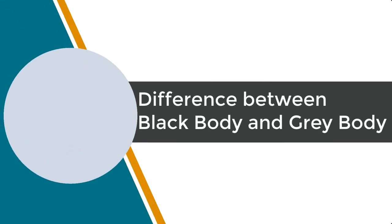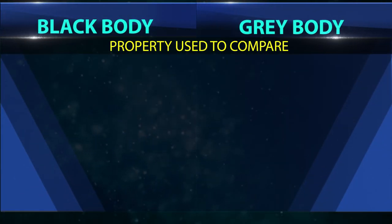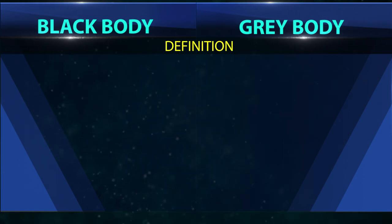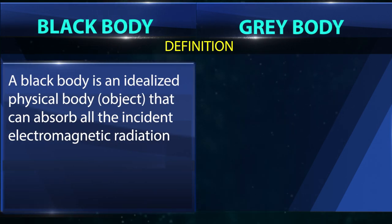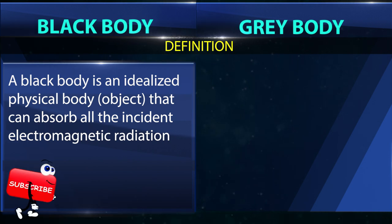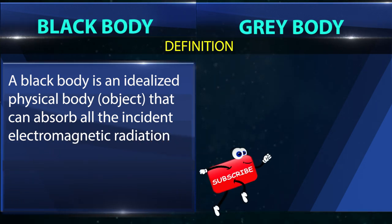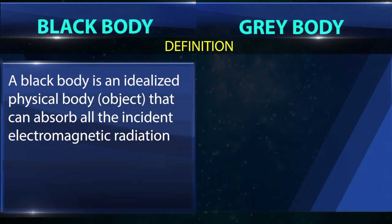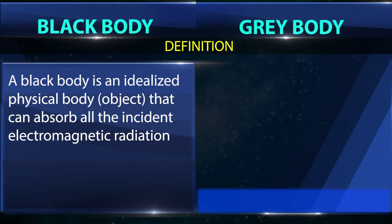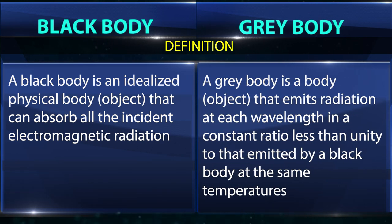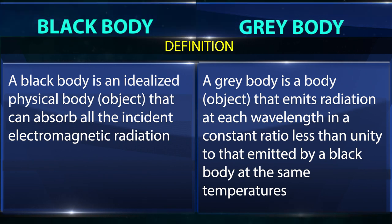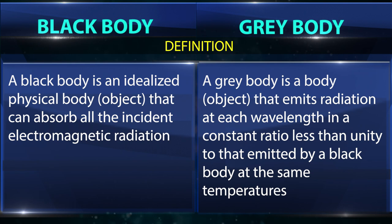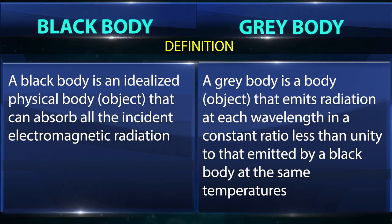Difference between black body and gray body. Definition — black body: a black body is an idealized physical body or object that can absorb all the incident electromagnetic radiation. Definition — gray body: a gray body is a body or object that emits radiation at each wavelength in a constant ratio less than unity to that emitted by a black body at the same temperature.